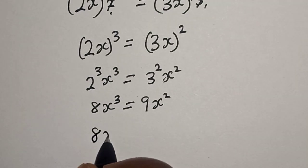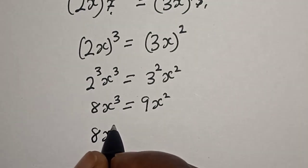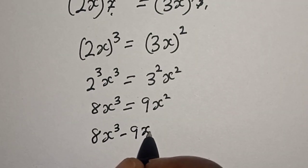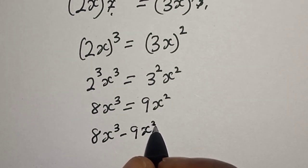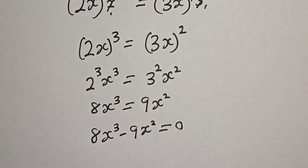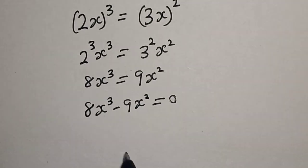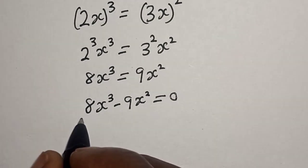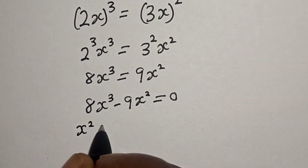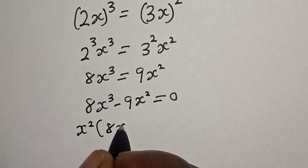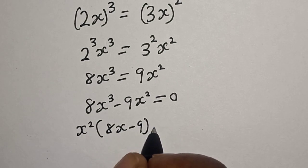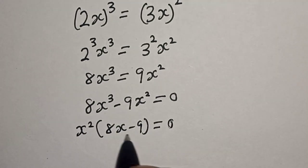Now let's bring everything to one side. We have 8x³ minus 9x² is equal to 0. Then x² is common, so let's factor it out. We have x² times (8x minus 9) is equal to 0.